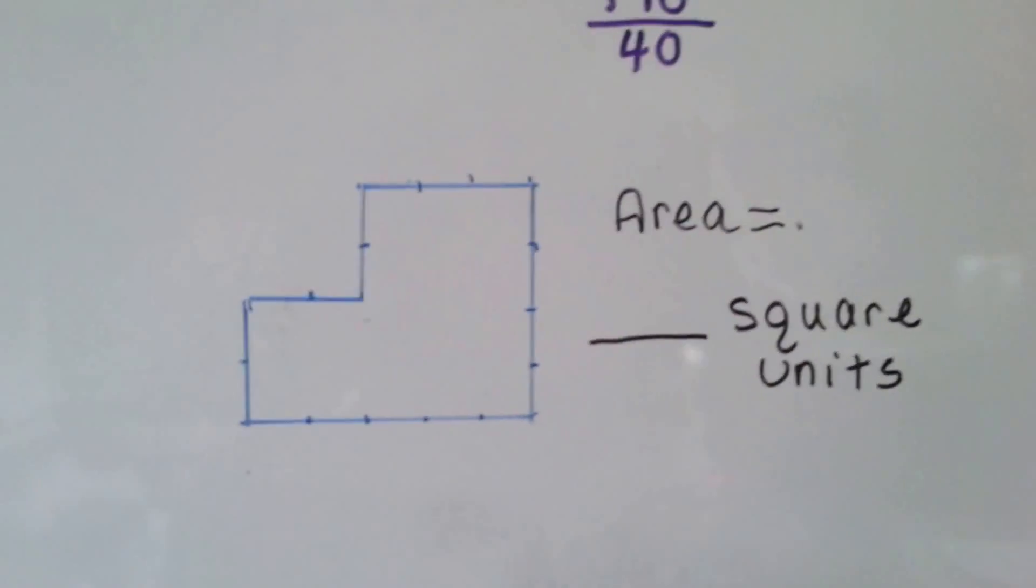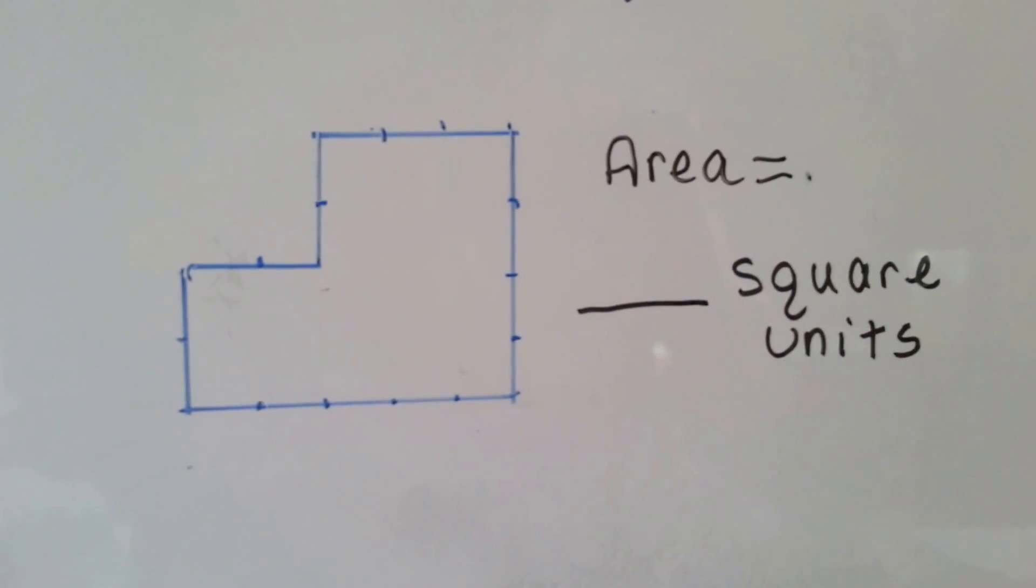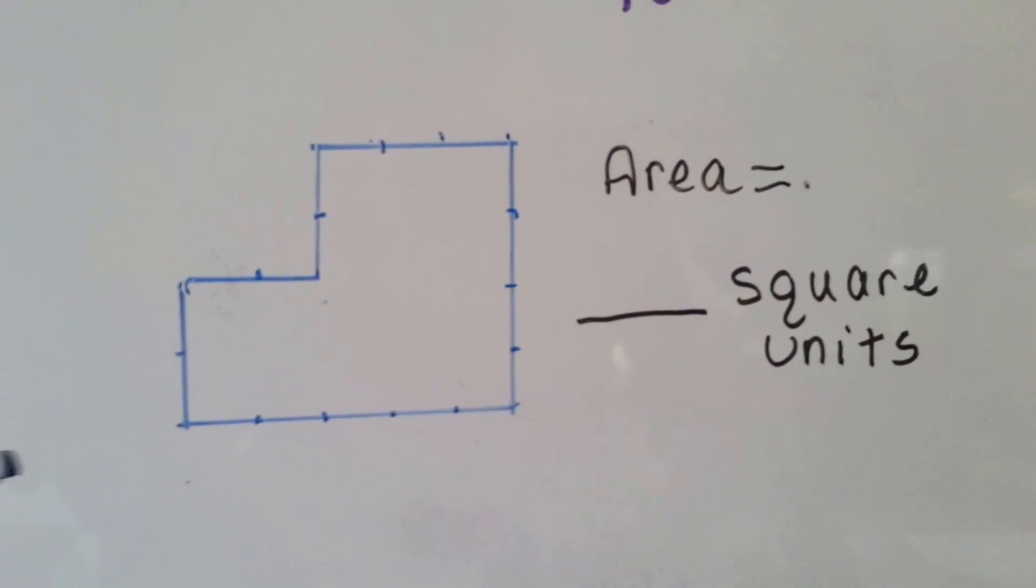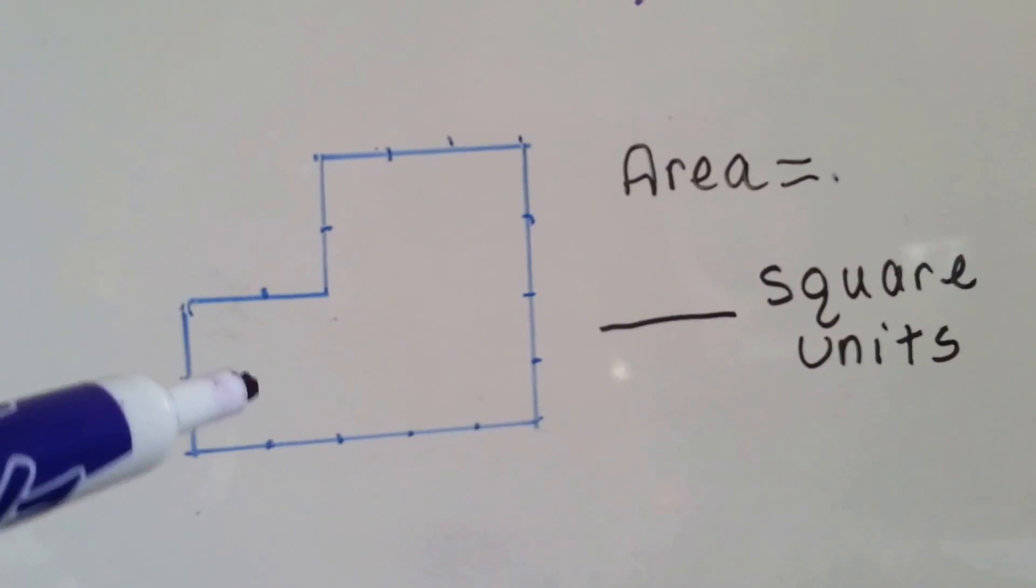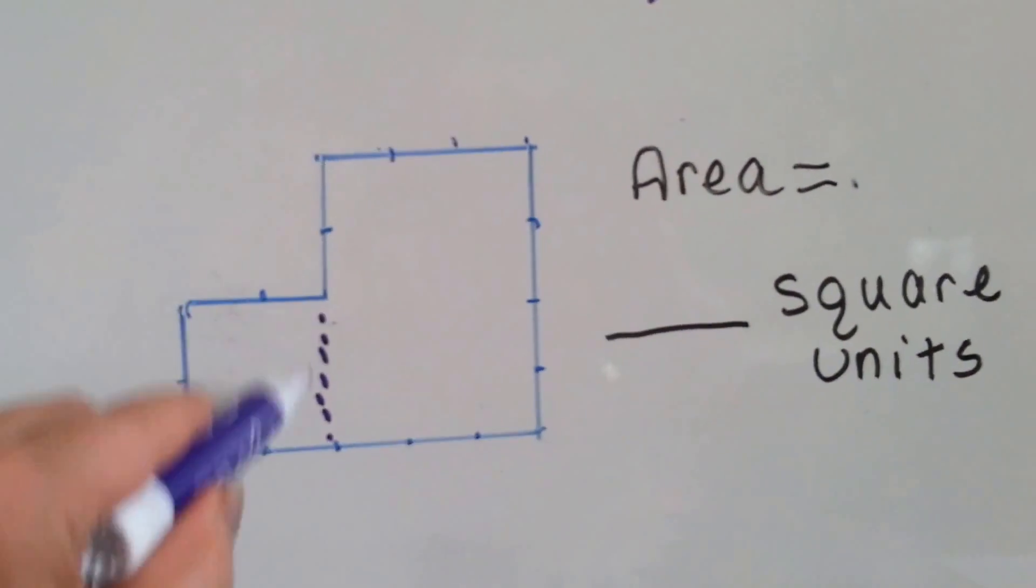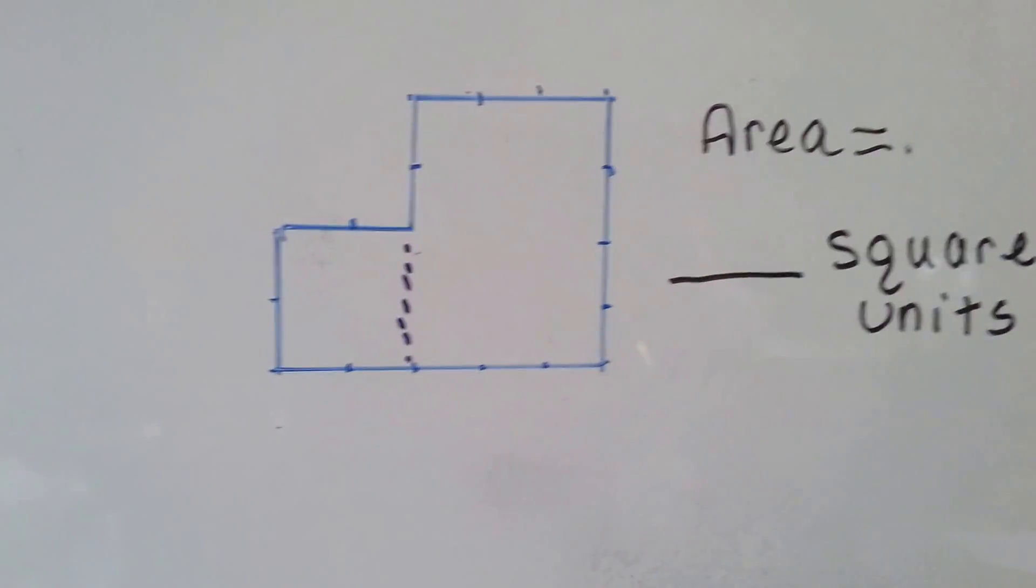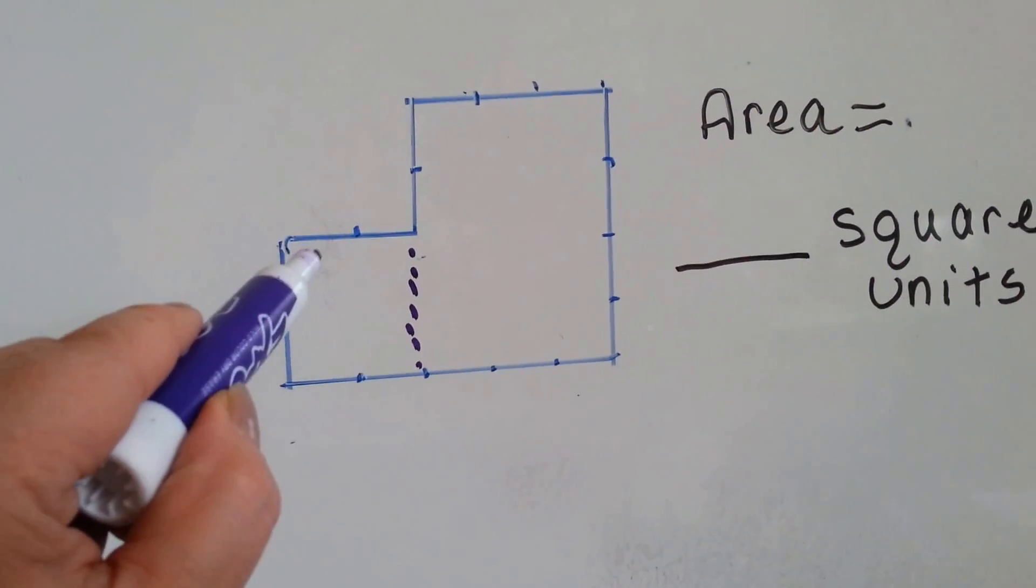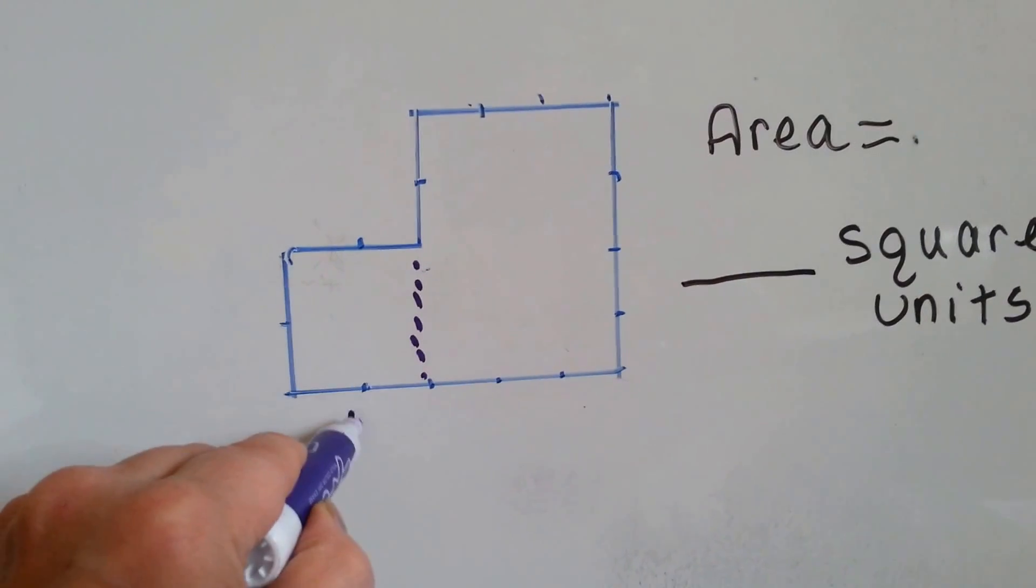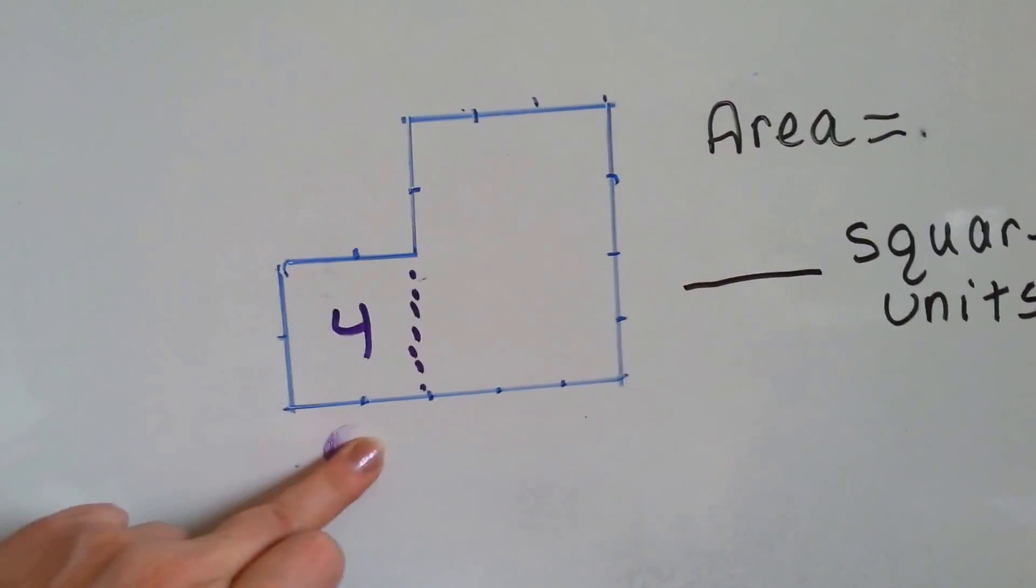Now, can you look at this one without the lines and figure out how many square units there are in this one? Can you figure it out? How many do you think are in this section right here? Can you see how many you think might be in this section here? 1, 2, 3, 4. So, there's 4 in this little area here. There's 4 inside of there.